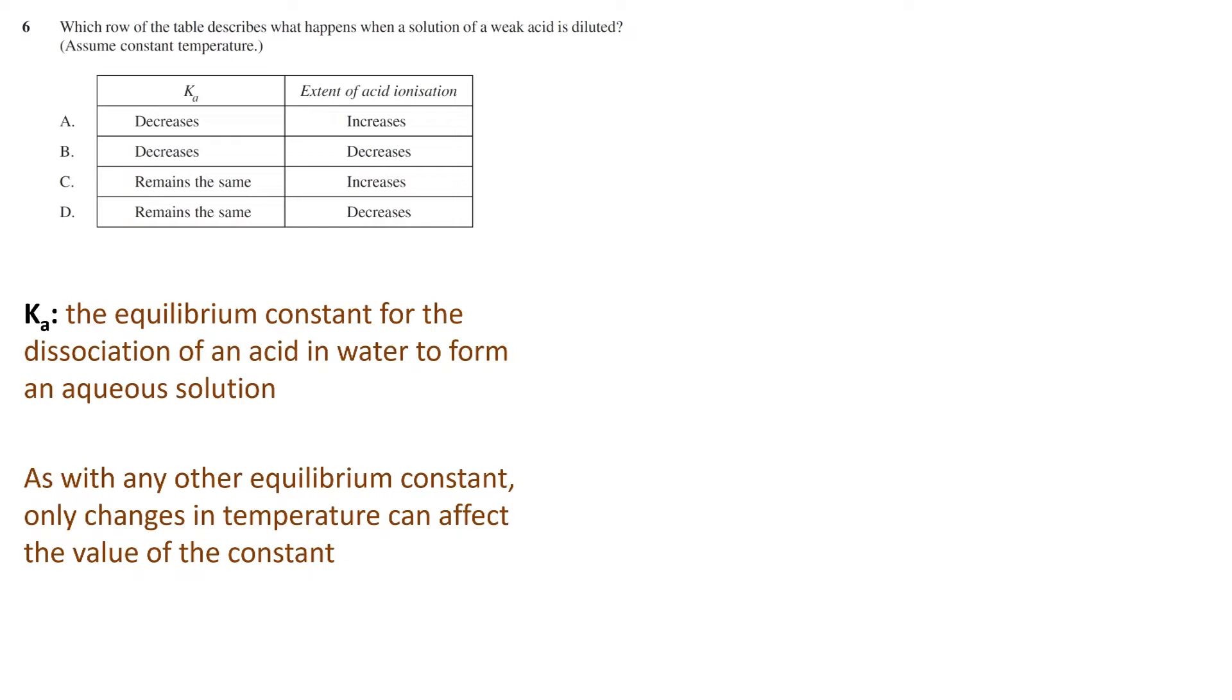As the question specifically states the process takes place at a constant temperature, we can therefore eliminate option A and B, which involve a changing Ka value.